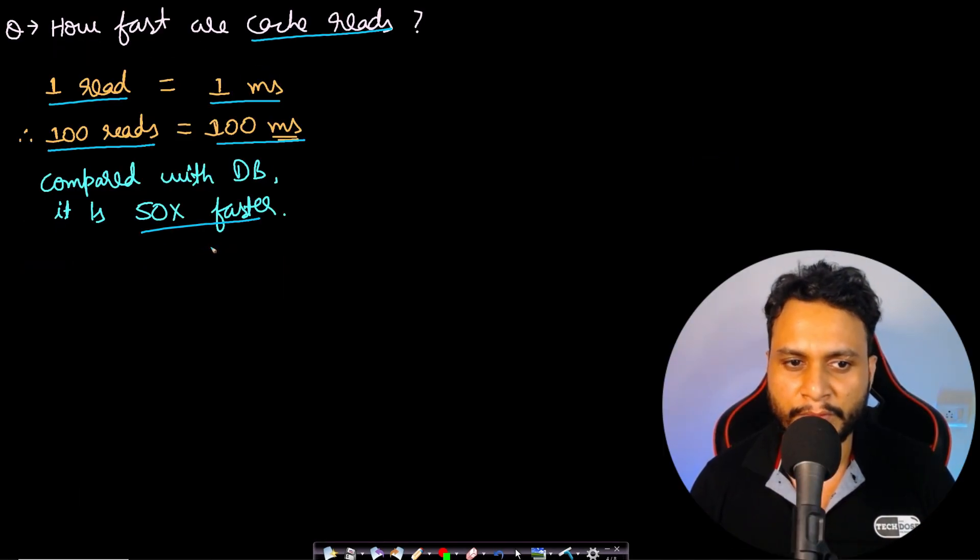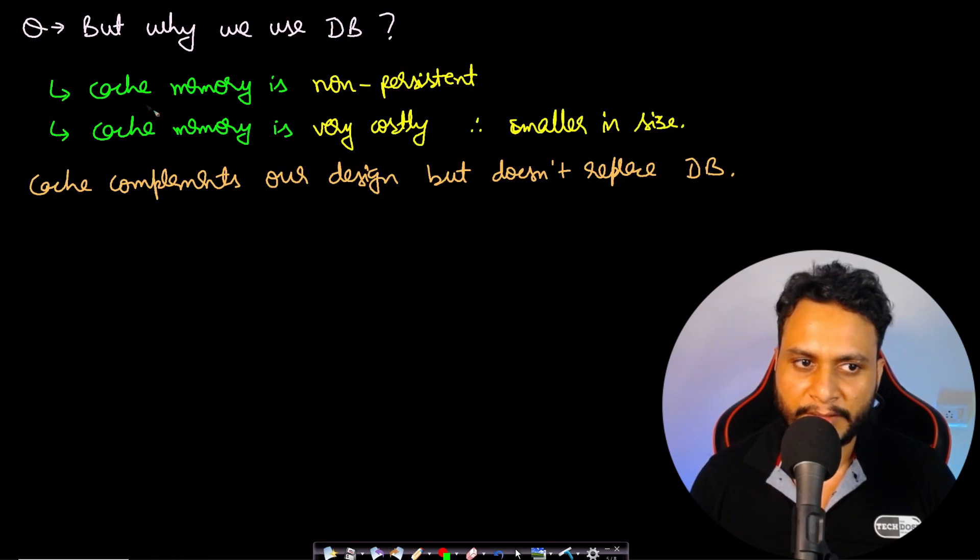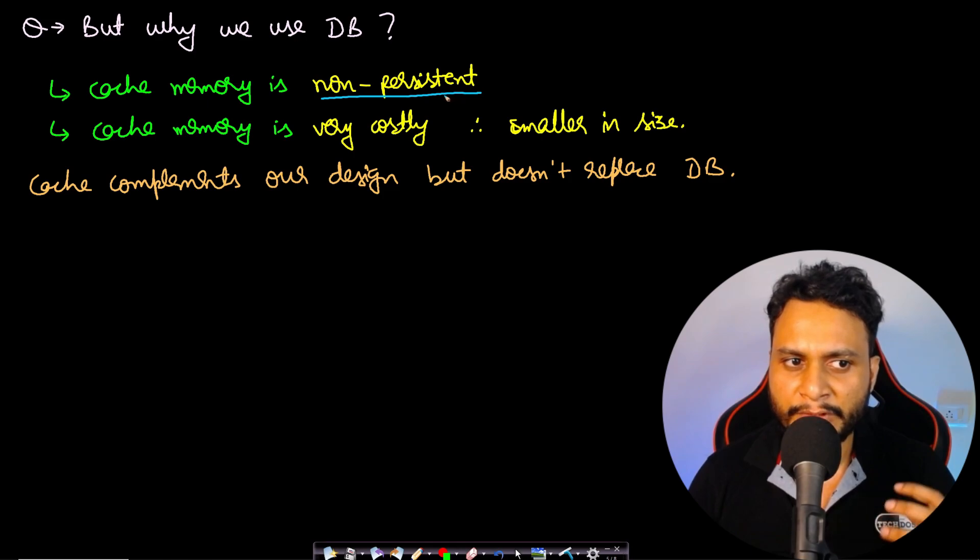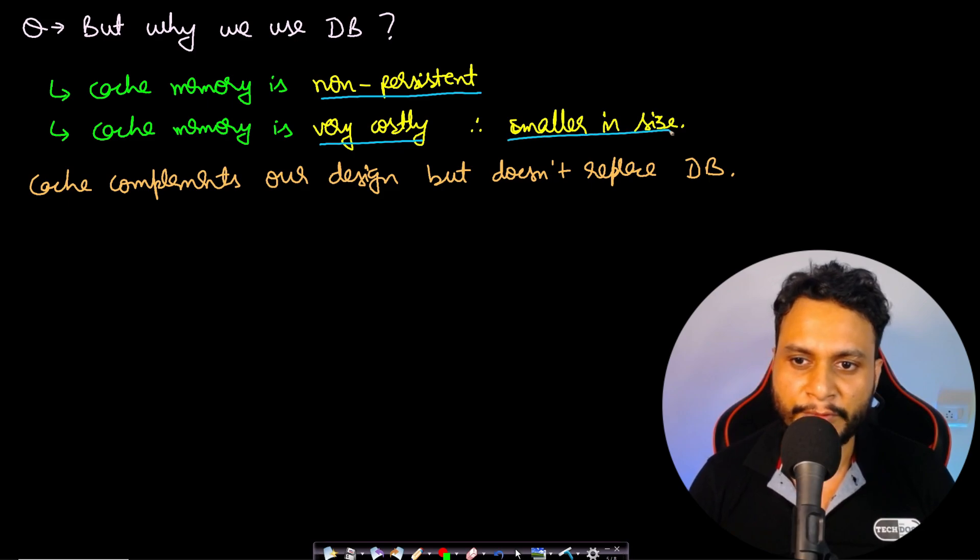But why are we even using database? We can do the job using cache 50 times faster, right? But the thing is, the cache memory is non-persistent. That means if you restart the cache or if the cache memory crashes or is turned off, then you cannot recover the data. The data will be entirely lost, like you lose the data when you restart your PC. Everything in the RAM gets lost, so it is a volatile memory. Cache is not a persistent memory.